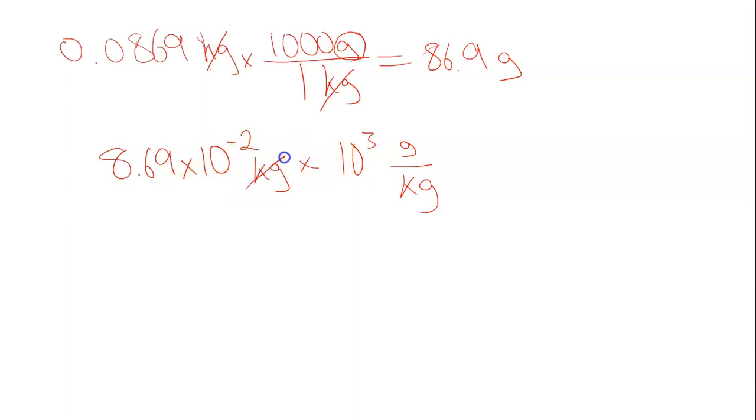I'm just writing it in a different form, and now we can simply add the exponents. When I convert this, the kilograms are going to drop, just like they did up here. The grams are going to be left over, and you just add the powers on the exponents. You've got 8.69 - that doesn't change at all because we just moved the decimal point - times 10 to the, well, negative 2 plus 3 is 1, grams.